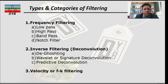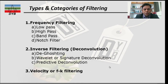Band pass uses the same terminology. Then we will discuss the notch filter, which is a spatial filter used to remove a certain band of frequencies from the seismic data. We will also have some introduction to deconvolution processes such as de-ghosting, which we discussed in the previous lecture, as well as wavelength, signature deconvolution, and predictive deconvolution. Some velocity filters used for seismic data removal will also be shown.